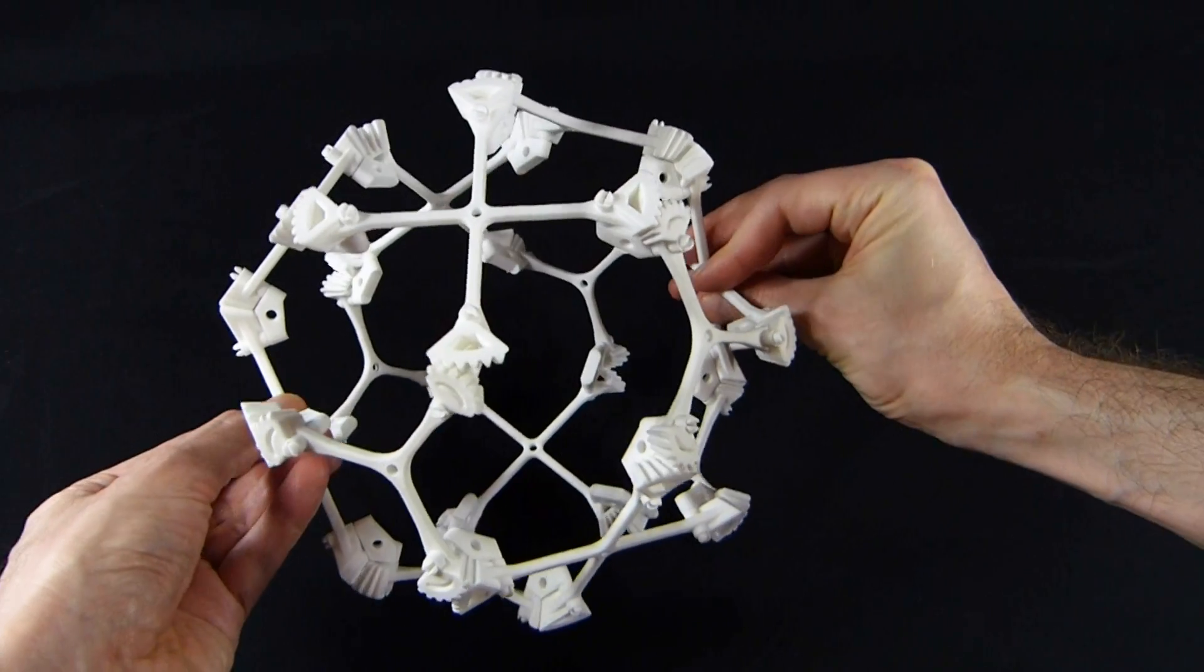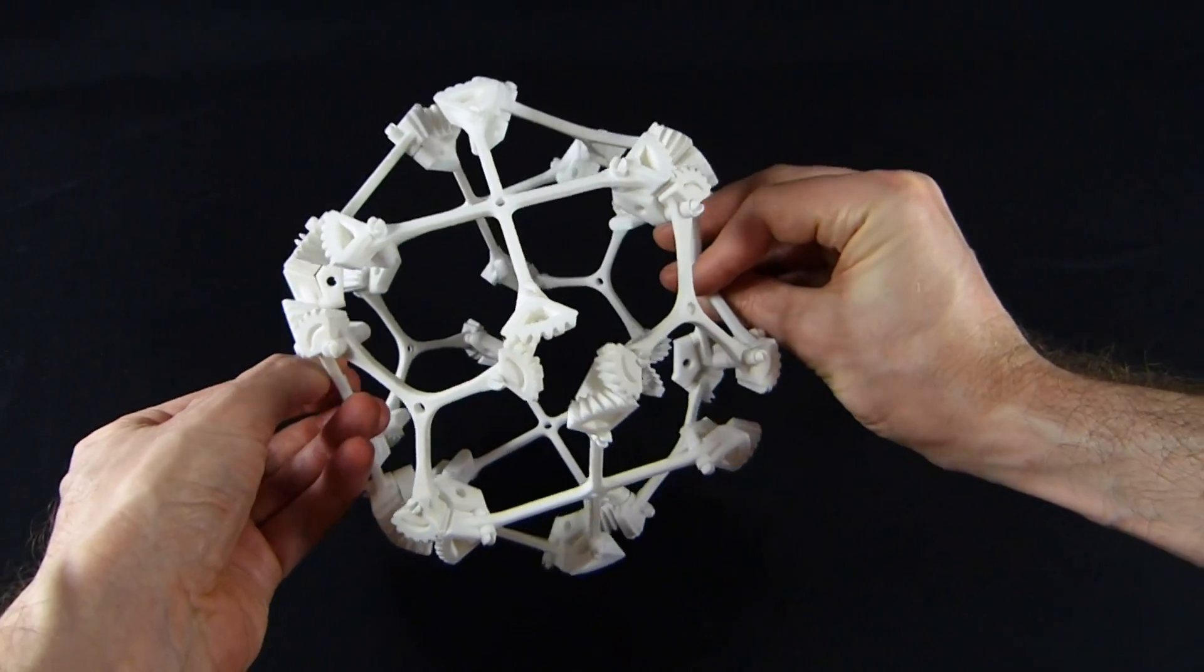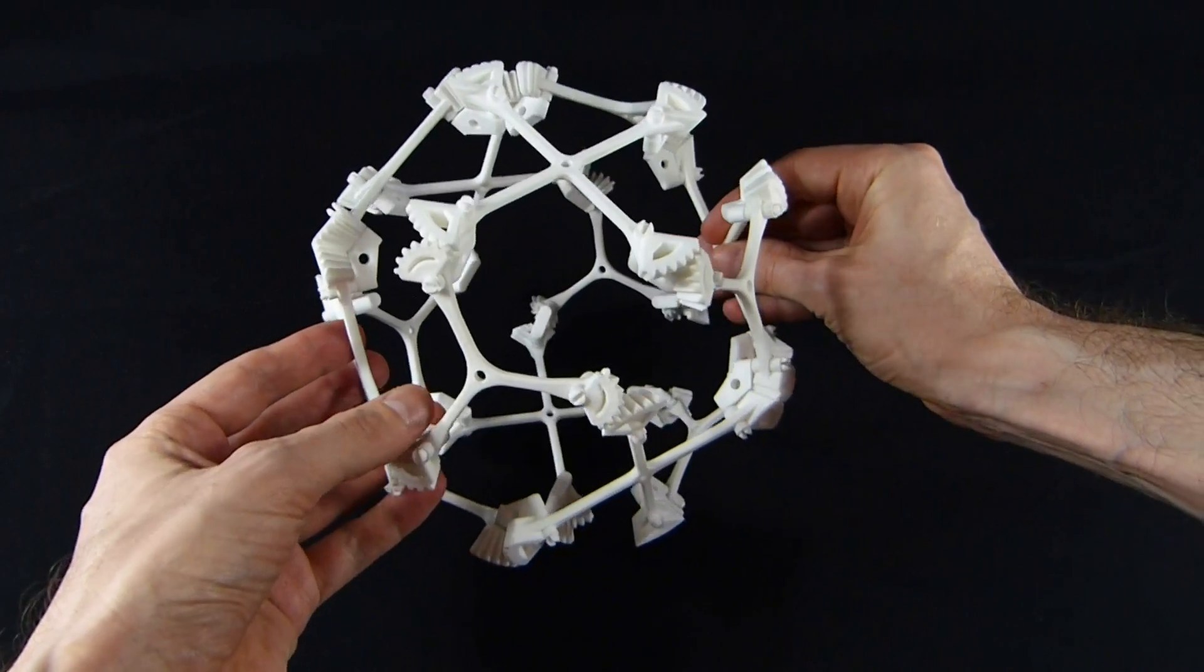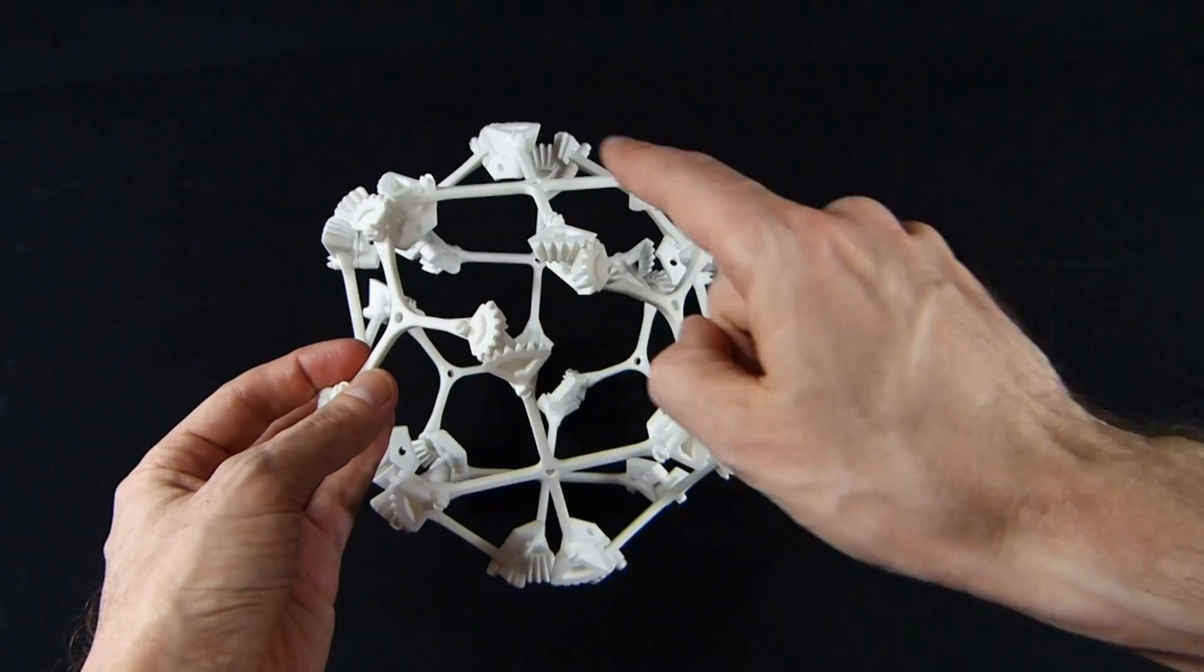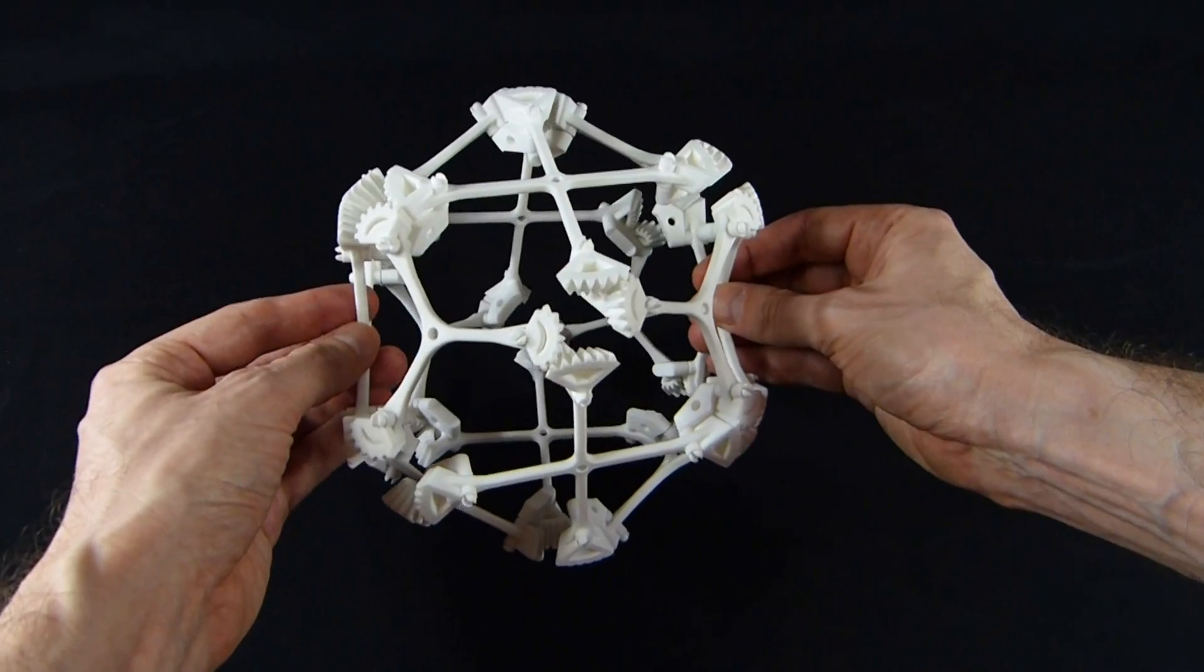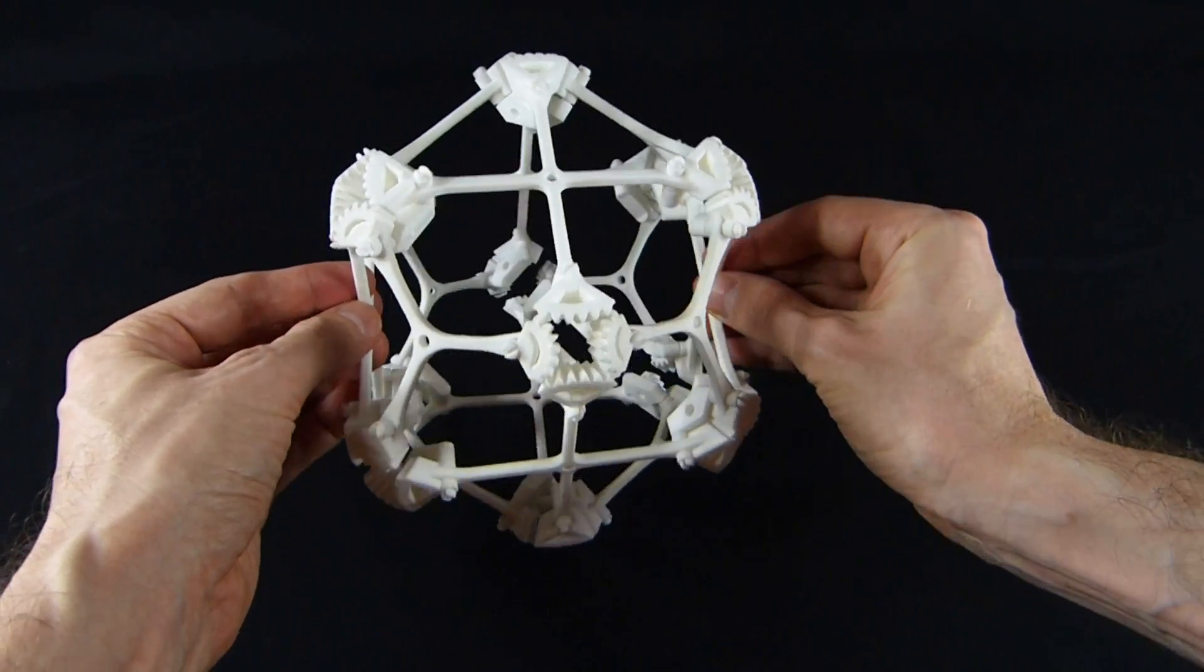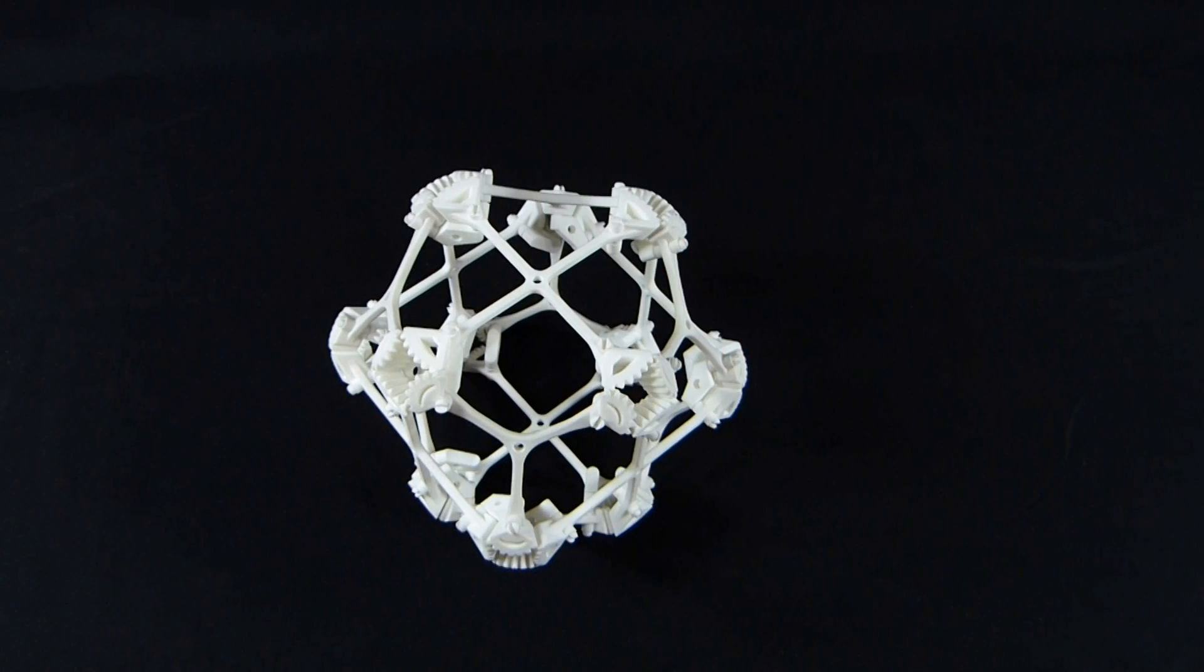This geared jitterbug technique should generalize to any polyhedron that has even vertex degree. You need an even number of faces meeting at the vertex because they alternate which way they rotate. But other than that, we think it should work for anything you want to try. This is the cube-octahedral geared jitterbug. Thanks for watching.